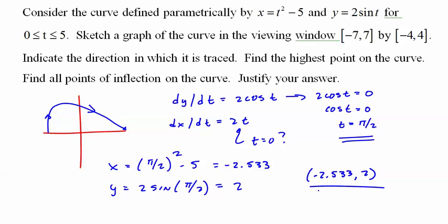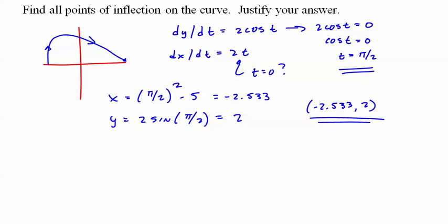Now how do we find all points of inflection? Well, that's the second derivative. So take dy/dx, which we haven't done yet, and that is 2cos(t) over 2t, which is cos(t)/t. And then we got some mess to do because we have to take the derivative of that.